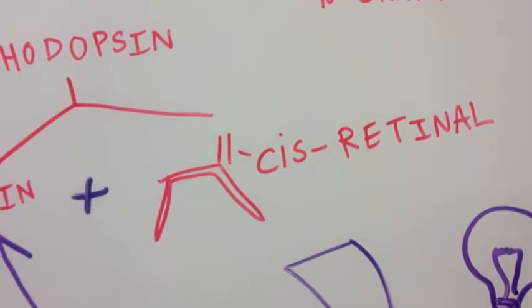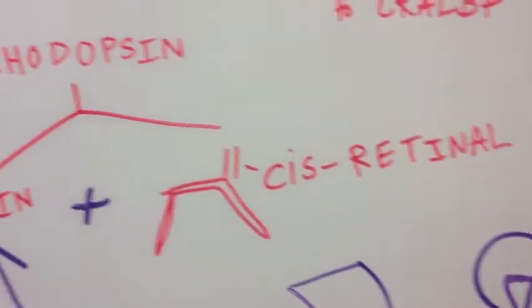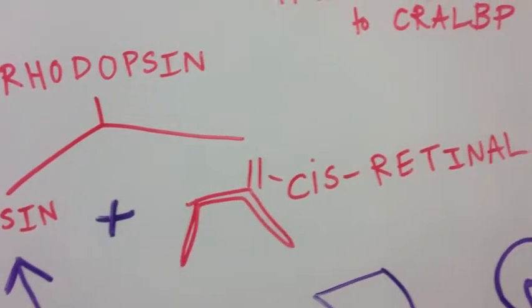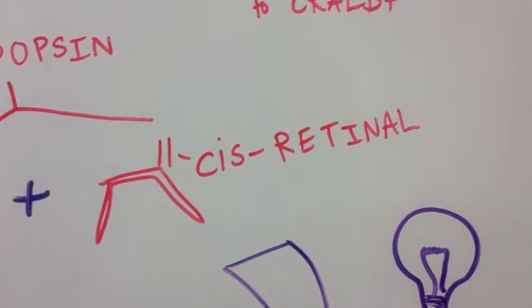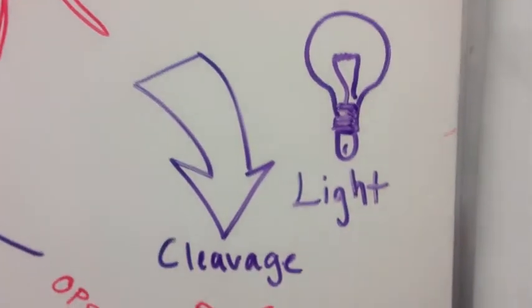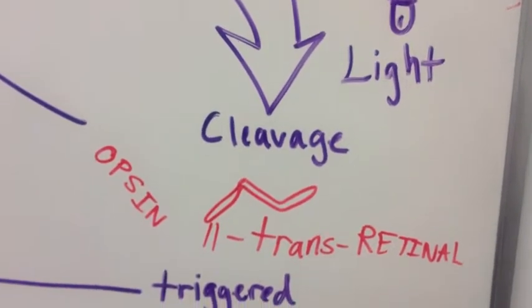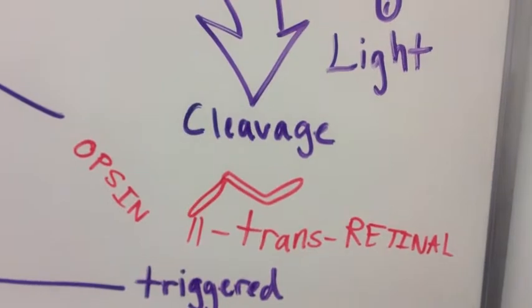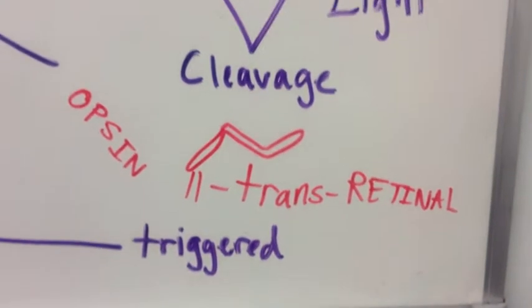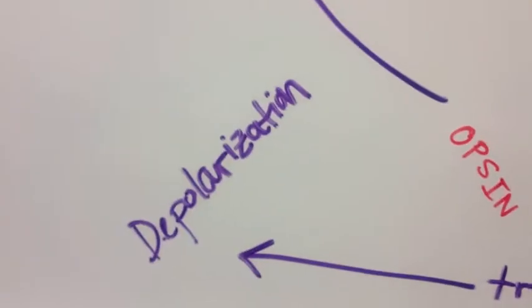In the photoreceptor of the rod cell, 11-cisretinol is combined with opsin to form rhodopsin. When light travels through the nerve tissue and hits the rod, it causes a cleavage of the opsin and a transformation of 11-cisretinol to 11-transretinol, which triggers the action potential and causes the photoreceptor cell to depolarize.